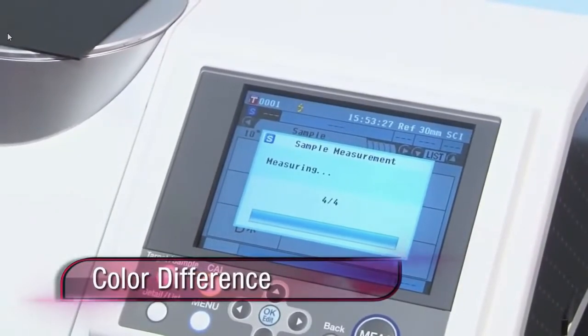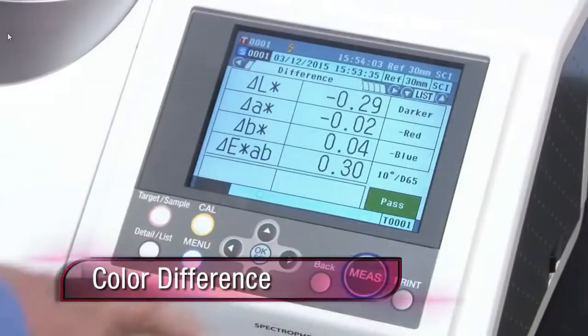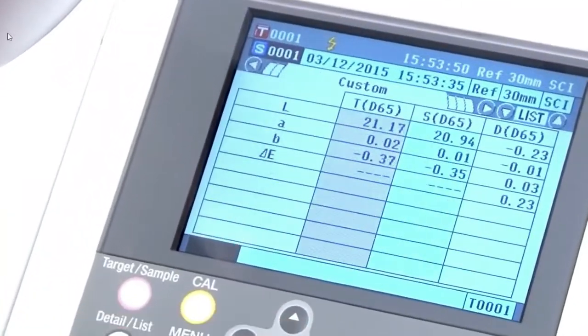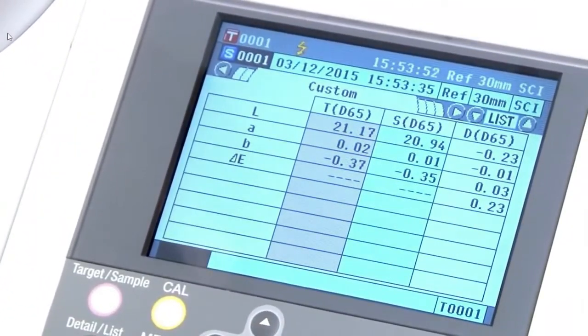The differences between the sample and standard are calculated using the resulting colorimetric values. Differences are shown numerically to identify color inconsistencies between products.